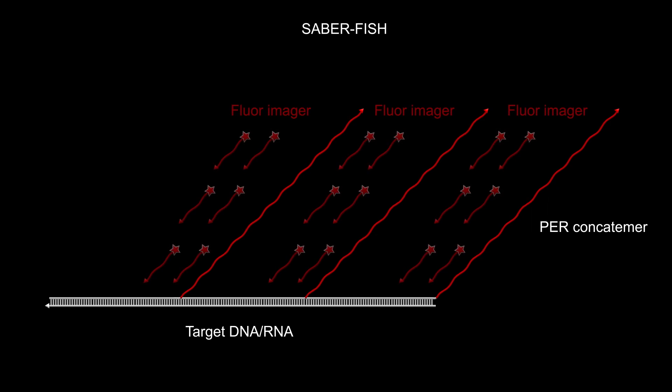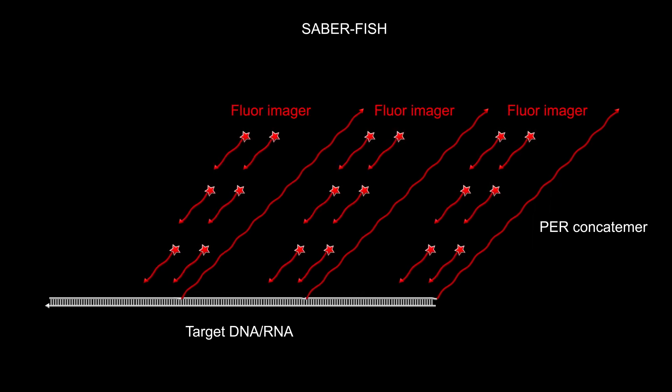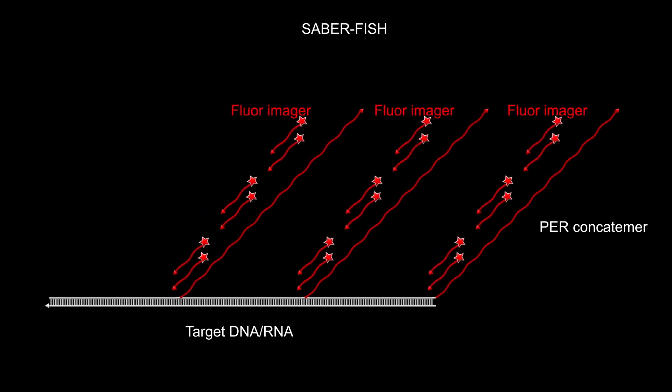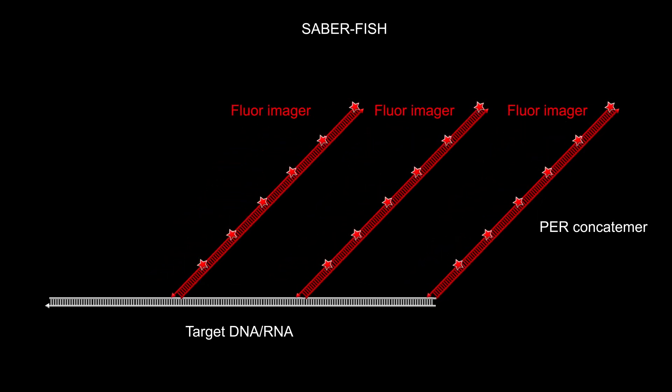The PER-concatemers provide scaffolds onto which, in the next step, multiple fluorescent imagers with short DNA sequences that are complementary to the concatemer repeats can be assembled.